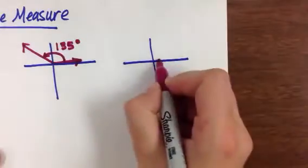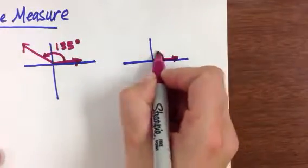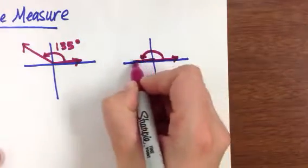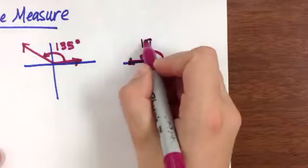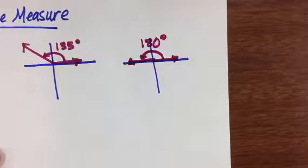So I can do another one. Draw my initial side. Maybe I come all the way back down to the other side of the x-axis. And now we know a straight line gives us an angle of 180 degrees, positive 180 degrees.